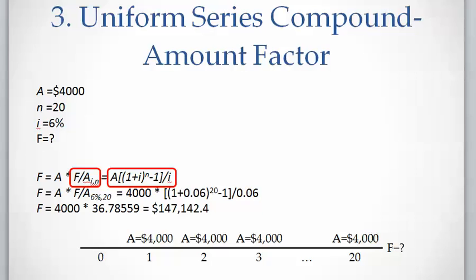And F equals A times the factor F over A. In this factor, I is 6%, N is 20, and we use the equation to calculate the F.